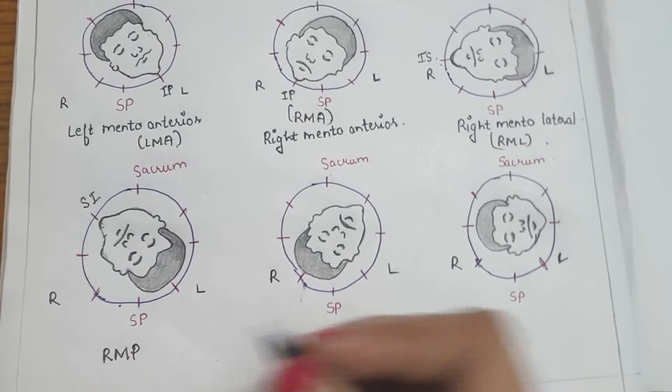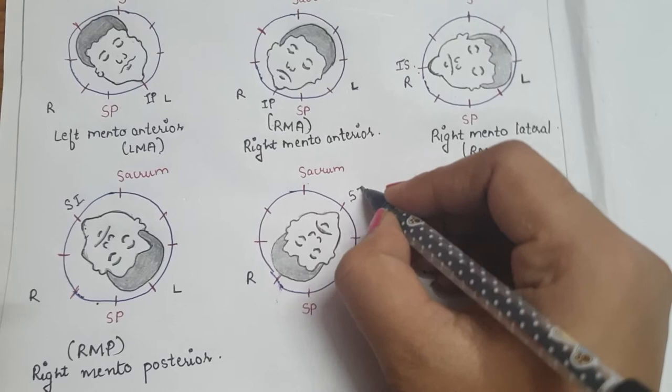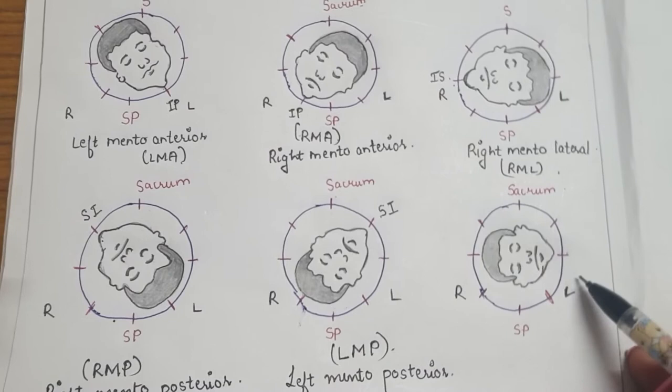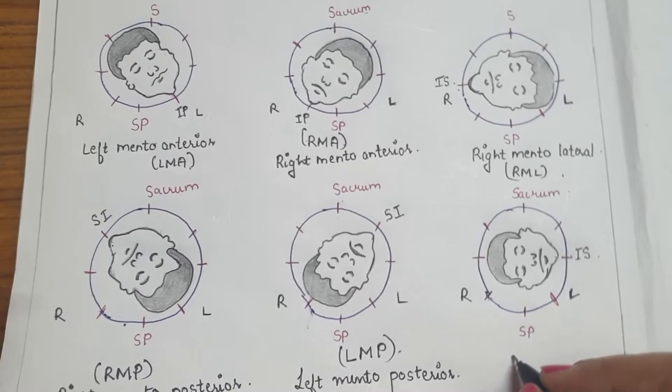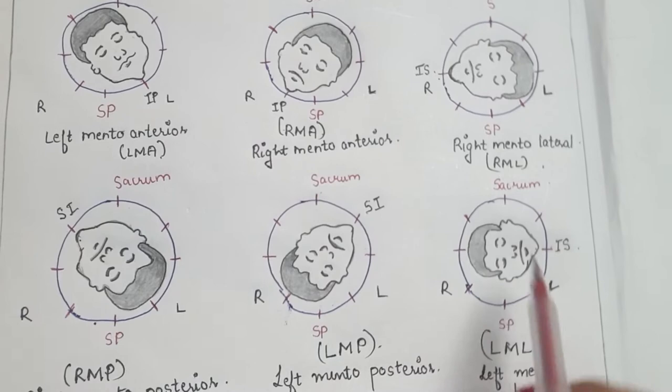In the fifth position, when the mentum or chin lies in relation to the sacroiliac joint on the left side, that position is known as left mento posterior. In the sixth and last position, when the mentum lies in relation to the left ischial spines, it is known as left mento lateral. Among these six positions, left mento anterior is the most common position.